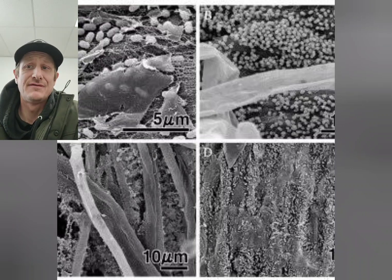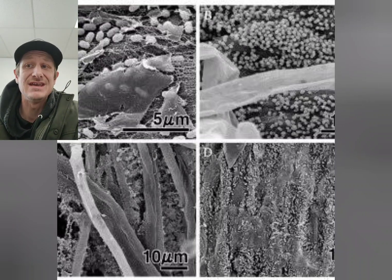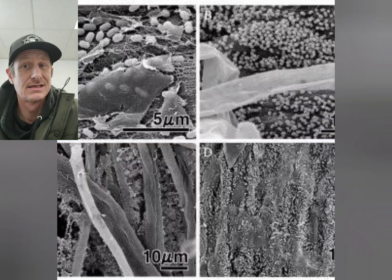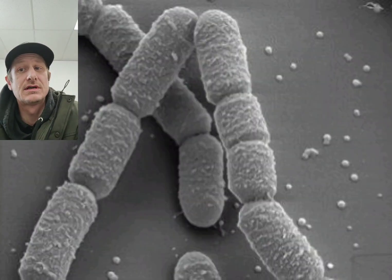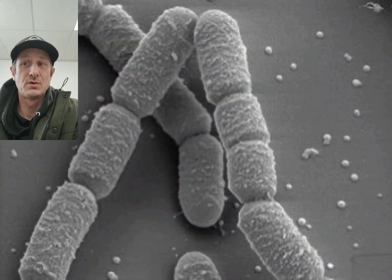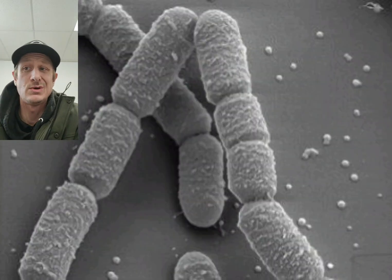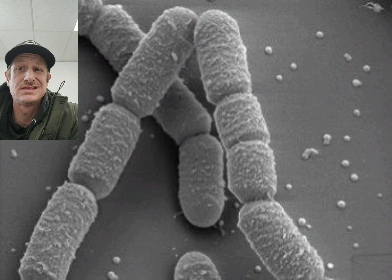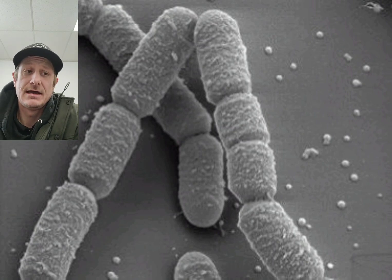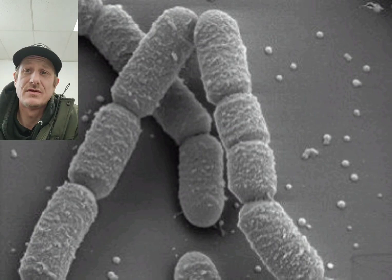Certain bacteria and fungi specialize in making phosphorus accessible to plants. These microorganisms break down complex insoluble phosphorus compounds using organic acids and enzymes, and there are several different species that do this.